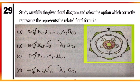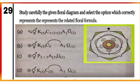Question 29: Study the given floral diagram carefully and select the option which correctly represents the related floral formula. The given floral diagram is of family Solanaceae, commonly called the potato family. The correct floral formula is option D. It is an actinomorphic bisexual flower. Calyx has 5 united sepals, corolla has 5 united petals, androecium has 5 epipetalous stamens fused with the corolla, and gynoecium has bicarpellary syncarpous superior ovary. Mark D.